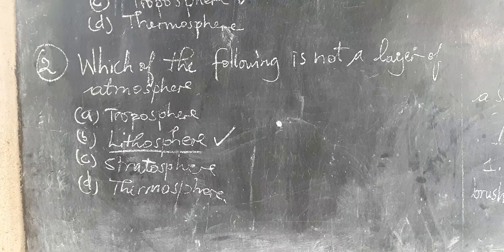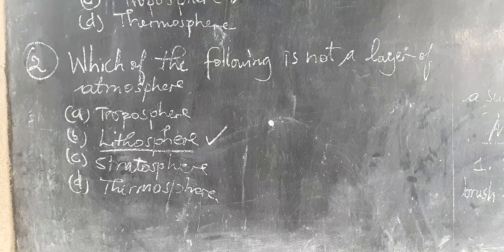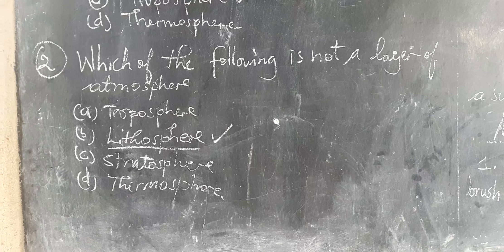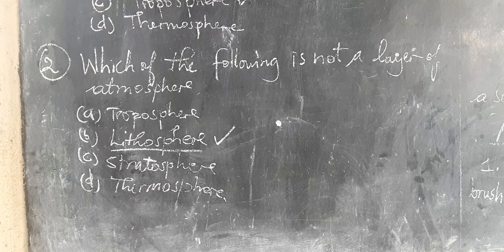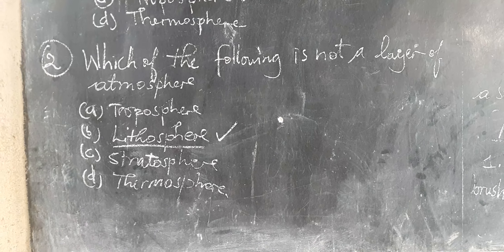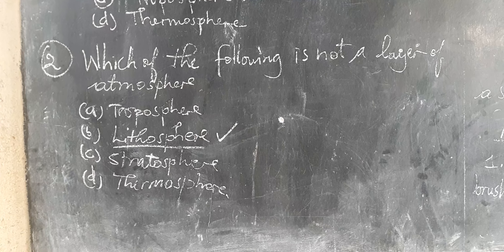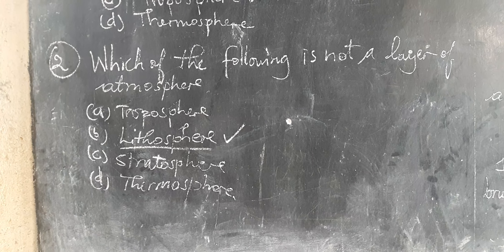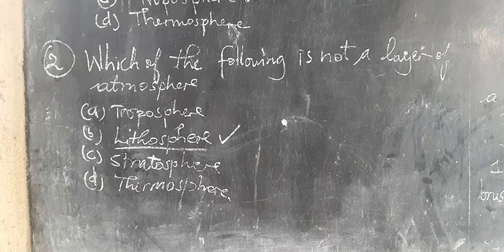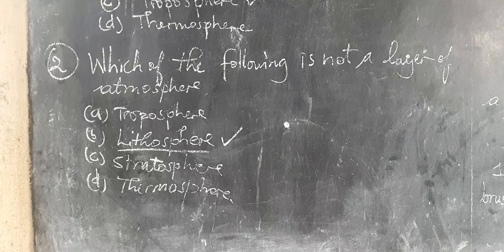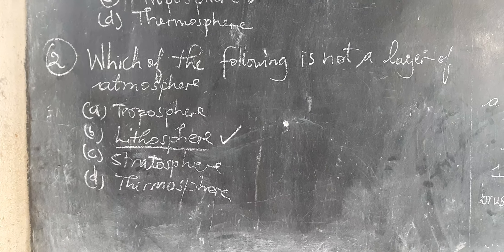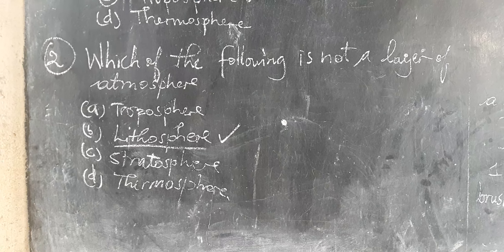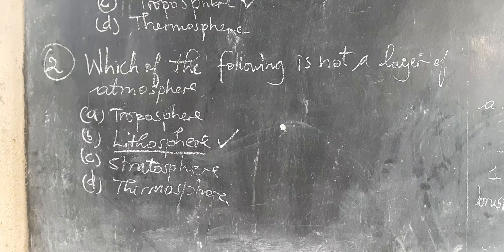A. Troposphere, B. Rhetosphere, C. Stratosphere, D. Thermosphere. The correct answer is Rhetosphere — Rhetosphere is not a layer of atmosphere. Troposphere, Stratosphere, and Thermosphere are all layers of atmosphere. So the correct answer is B.